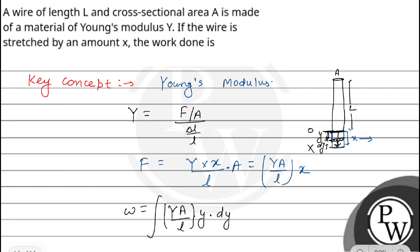So we will integrate 0 to capital X. That comes out to be capital YA by small L, y squared by 2, and its limit 0 to x. We put the value of y. That is, work done equals YA by L into x squared by 2.